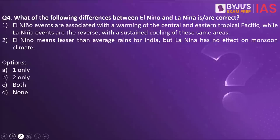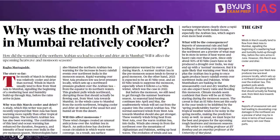Which of the following differences between El Niño and La Niña are correct? Statement one: El Niño events are associated with the warming of the central and eastern tropical Pacific, where La Niña events are the reverse with the sustained cooling of these same areas. Statement two: El Niño means lesser than average rains for India, but La Niña has no effect on monsoon climate. The answer is one only, because of a reference to El Niño and La Niña in this article.